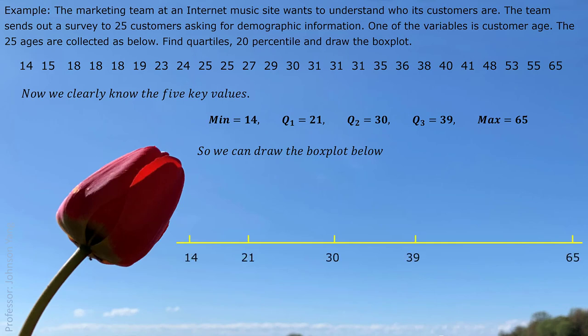We mark five key values on this axis. And then we draw the rectangle box from the first quartile to third quartile. Then we mark the second quartile or the median inside the box. So, we can tell this rectangular box carries 50% of the data. And then we mark the minimum value and the maximum value. And then we connect them. Here we done. Box plot.